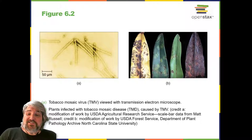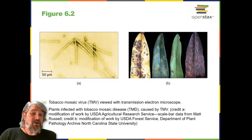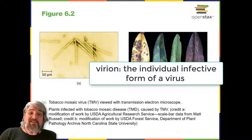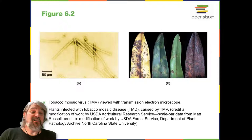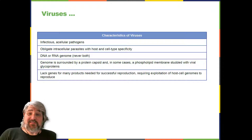The genome of a virus enters a host cell and directs the production of the viral components—proteins and nucleic acids needed to form new virus particles called virons. New virons are made in the host cell by assembly of viral components. The new virons transport the viral genome to another host cell to carry out another round of infection. Table 6.1 summarizes the properties of viruses.